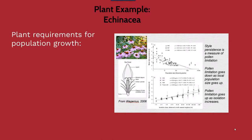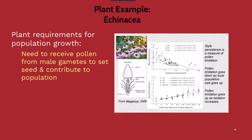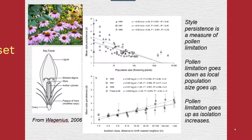Plants need to receive pollen from male gametes in order to set seed and undergo fertilization, contributing to the population. That pollen needs to travel by wind or by animal vector from one plant to the next. In a study by Wagenius in 2006, they found that population size of flowering plants — indicated on the x-axis of the top graph — had a negative correlation to mean style persistence, which is represented on the y-axis.